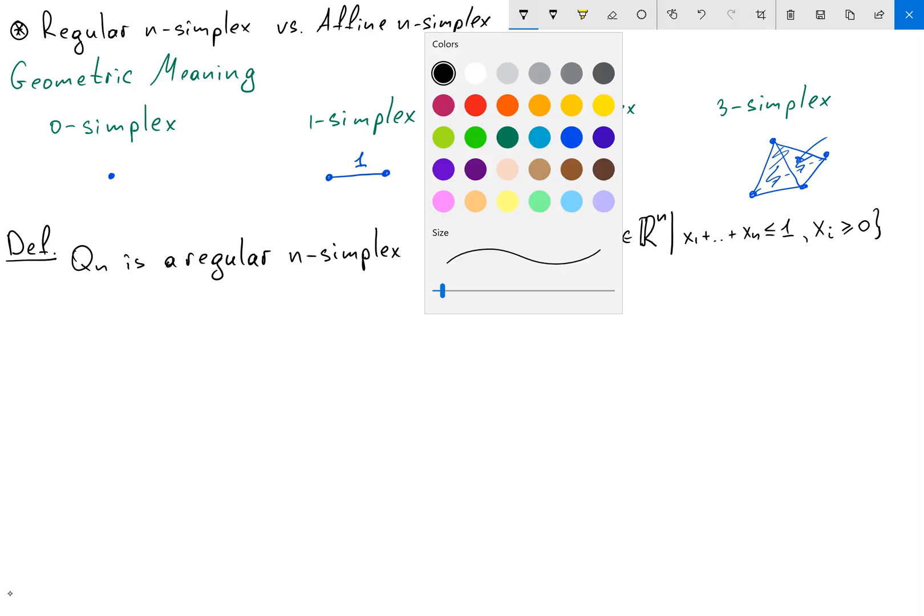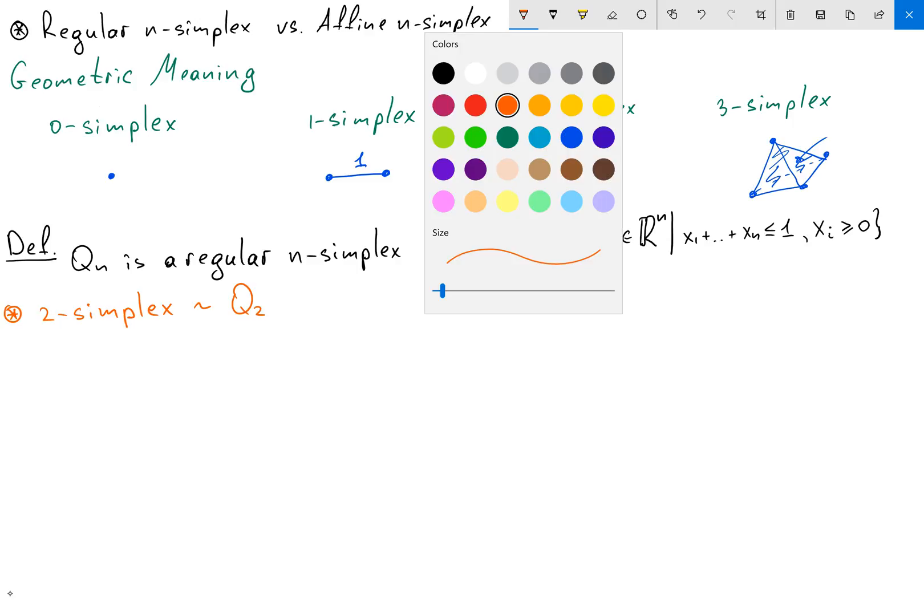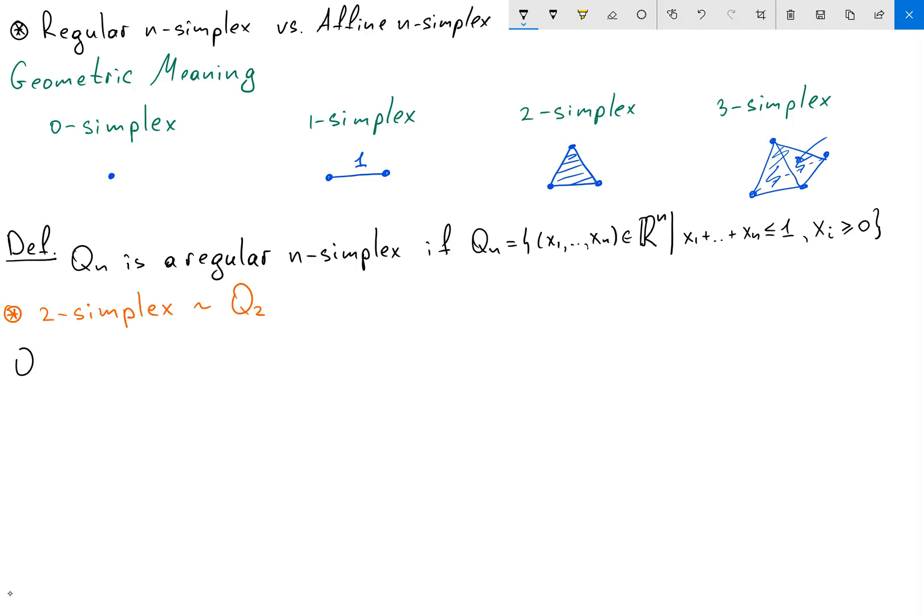So let's see how this definition works with our geometric intuition. Let's find by using this definition what is our 2-simplex. So what we're going to do, we're going to just write what is our Q2. Q2 is equal to, and we have inequality x1 plus x2 less or equal than 1. And we know that x1 is bigger or equal than 0, and x2 is bigger or equal than 0. So here we have Q2 as a subset of R2.